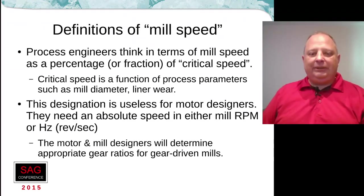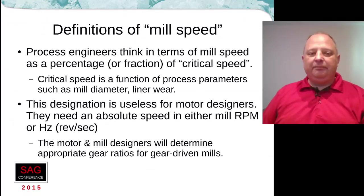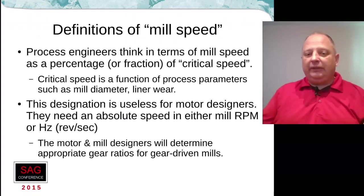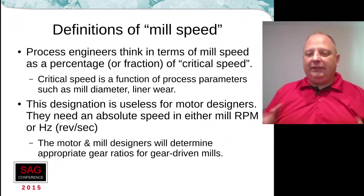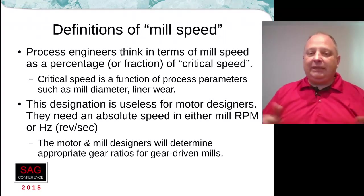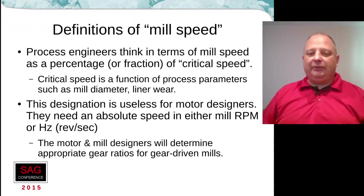Here's the issue where process engineers run into problems when communicating with motor designers. Process engineers think in terms of mill speed as a percentage or fraction of something called critical speed. Critical speed is a function of things that motor designers have no control over — such as the diameter of the mill and the wear of the liner. As your liner wears out, the critical speed changes, so you'll have a different critical speed in RPM when a liner is brand new versus when it's worn out. Most process models relate to critical speed because it makes them independent of mill diameter, and small and large mills generally have the same characteristics at the same critical speed.